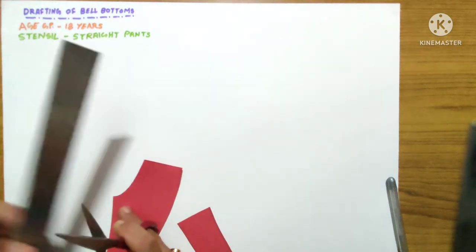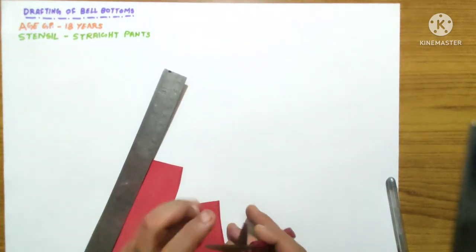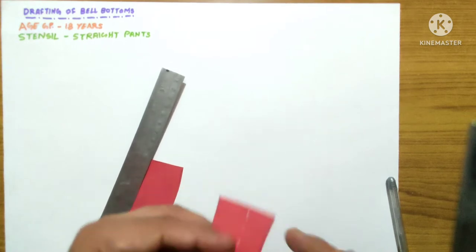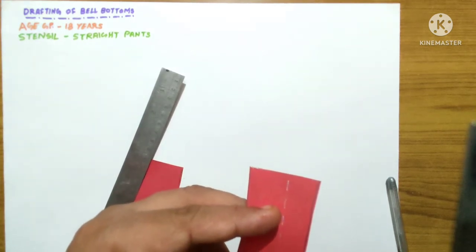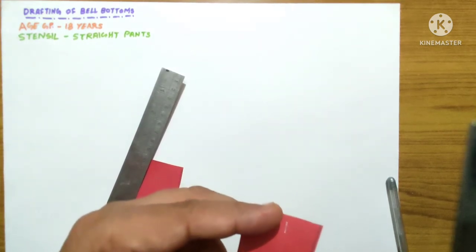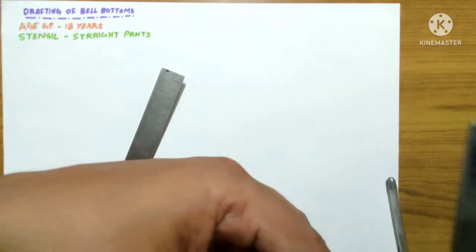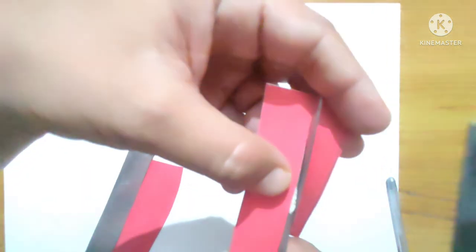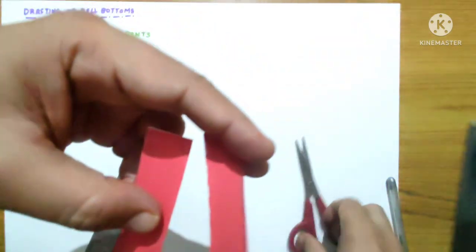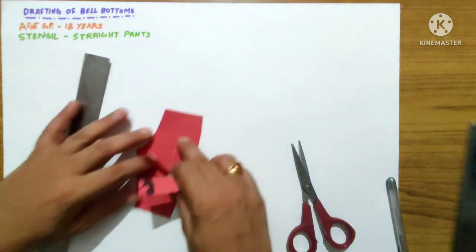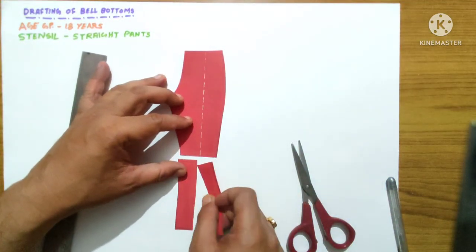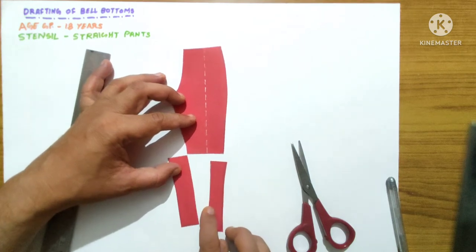And now we don't do anything with the upper portion but lower portion will again be divided into the two parts from the mid line. I hope you are enjoying the entire process of drafting and all. Now you can see these three pieces we have with us.